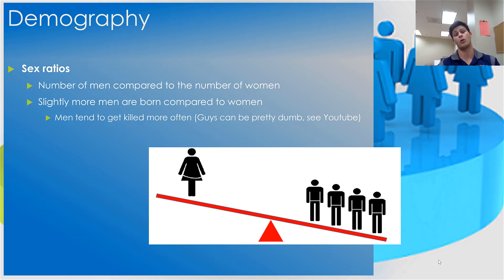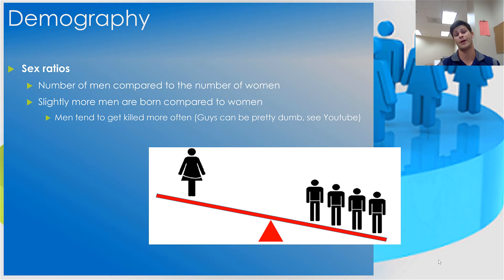Next we'll briefly discuss the sex ratio, which is important primarily when it gets knocked off balance. The sex ratio is the number of males in a population compared to the number of females. It should be noted that slightly more men are actually born relative to women — roughly 1.06 males for every one female born — and that is nature's way of compensating for the fact that men are more likely to die before reaching adulthood.